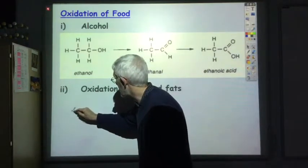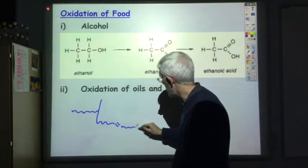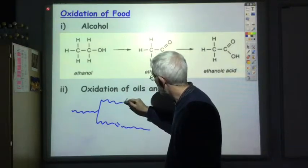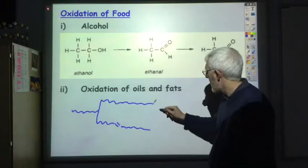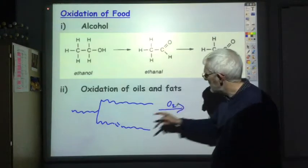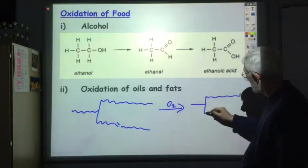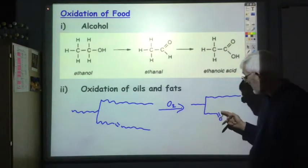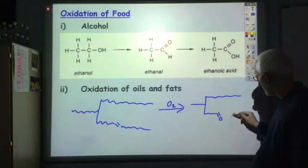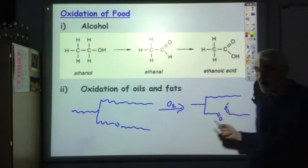Say we've got our fat molecule or oil molecule, and it's got, let's just keep it simple, we've just got the one carbon-carbon double bond in there. If that gets oxidized, you break the carbon-carbon double bond and what you produce is a carbon C double bond O at the end of the chain. In other words, an aldehyde and another one from the other part of the chain. So you break the carbon-carbon double bond and make two C double bond O's, making two aldehydes.